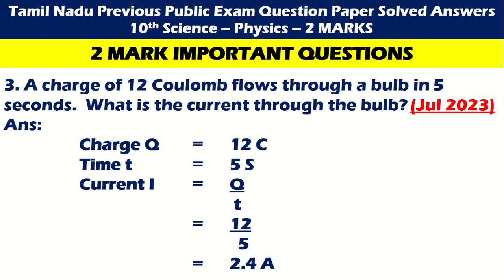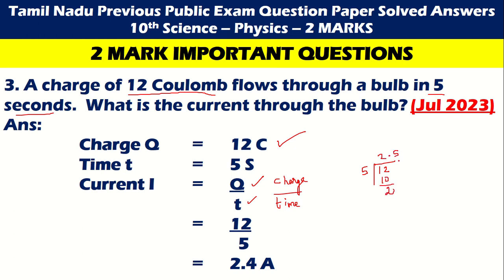Next one: A charge of 12 Coulombs flows through a bulb in 5 seconds. What is the current? Charge q = 12 C, time t = 5 seconds. Current I = q/t, where q is charge and t is time. So I = 12/5 = 2.4 Ampere.